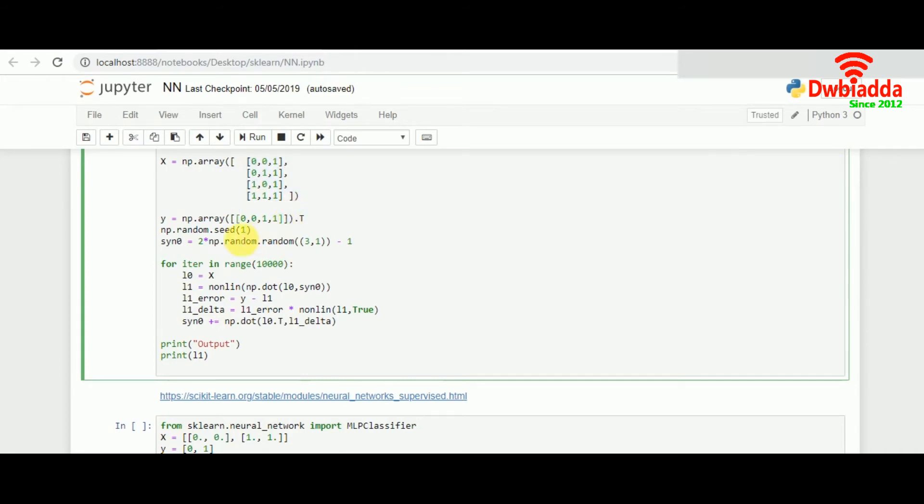So that computer can actually try to predict the values and then compare it with the output and see how good and efficient it can come after 10,000 rounds. So once that is done we will try to print the L1 that is the second layer, layer 1 of our output or the output layer, the second layer of our neural network and let's try to execute this.